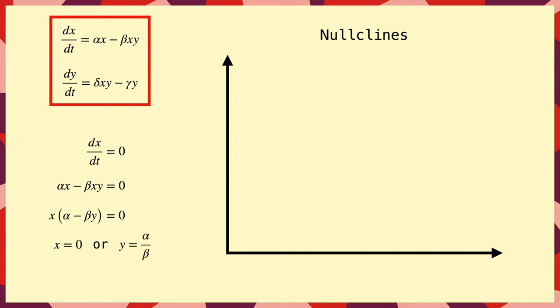So, we can go ahead and draw these on the graph, but because dx by dt is 0 on these lines, that means that only y is changing whenever we are on these lines. So, we must cross them vertically. So, we'll put some little ticks on them to make it clear we need to cross them vertically.